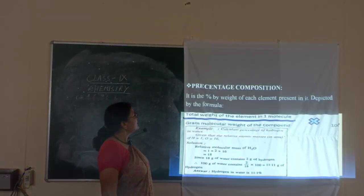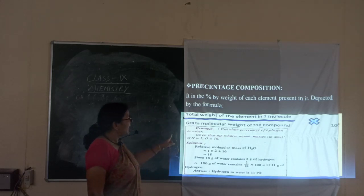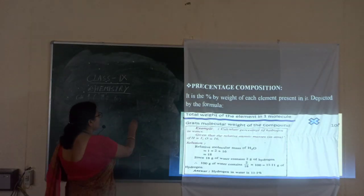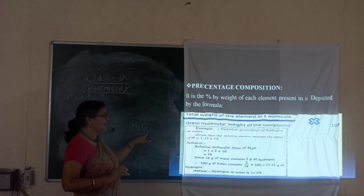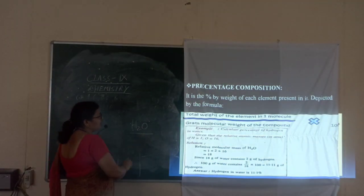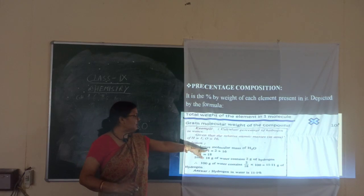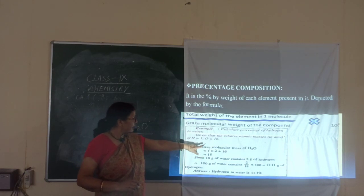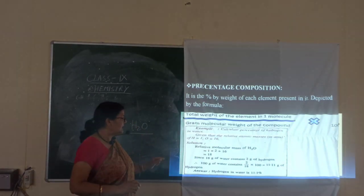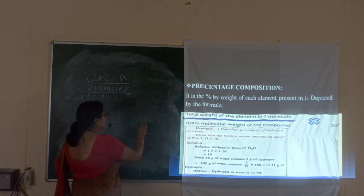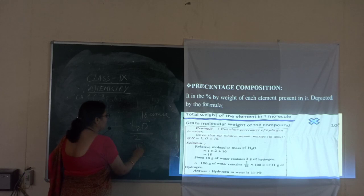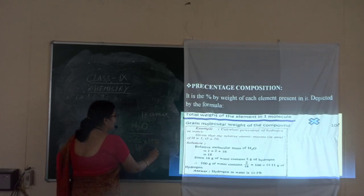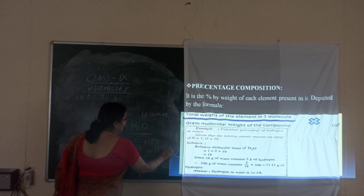And the next one is the percentage calculation — how to calculate the percentage. Suppose you are writing water H2O — you can get the percentage of hydrogen. Total molecular mass will be 18: 1×2 plus 16 = 18. And if you are calculating for hydrogen, that is 2 upon 18 into 100, that will be 11.11 percent.